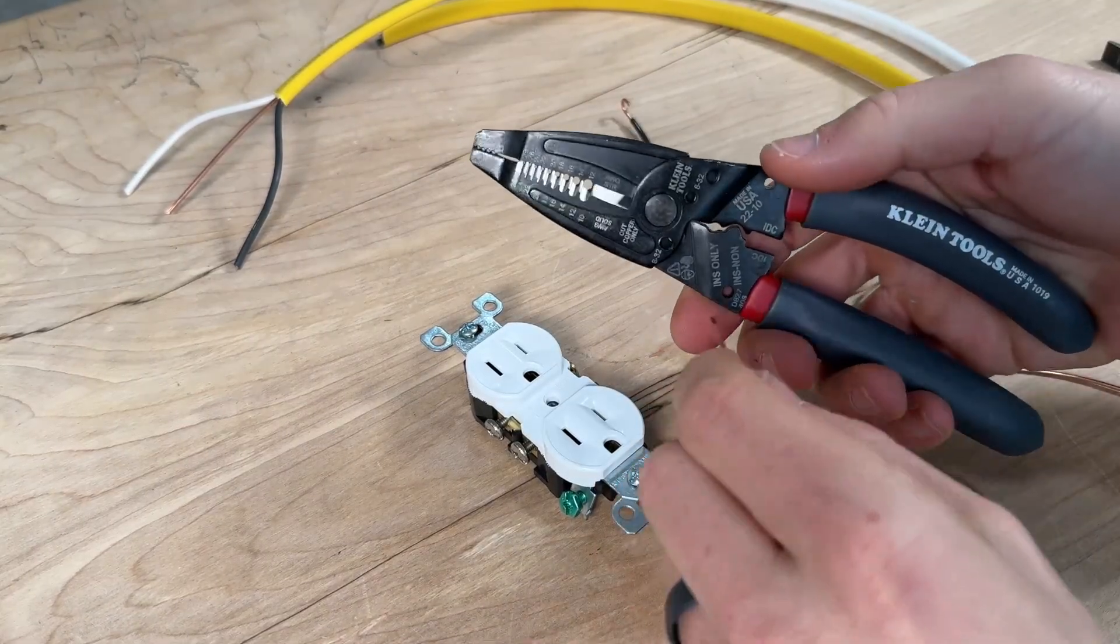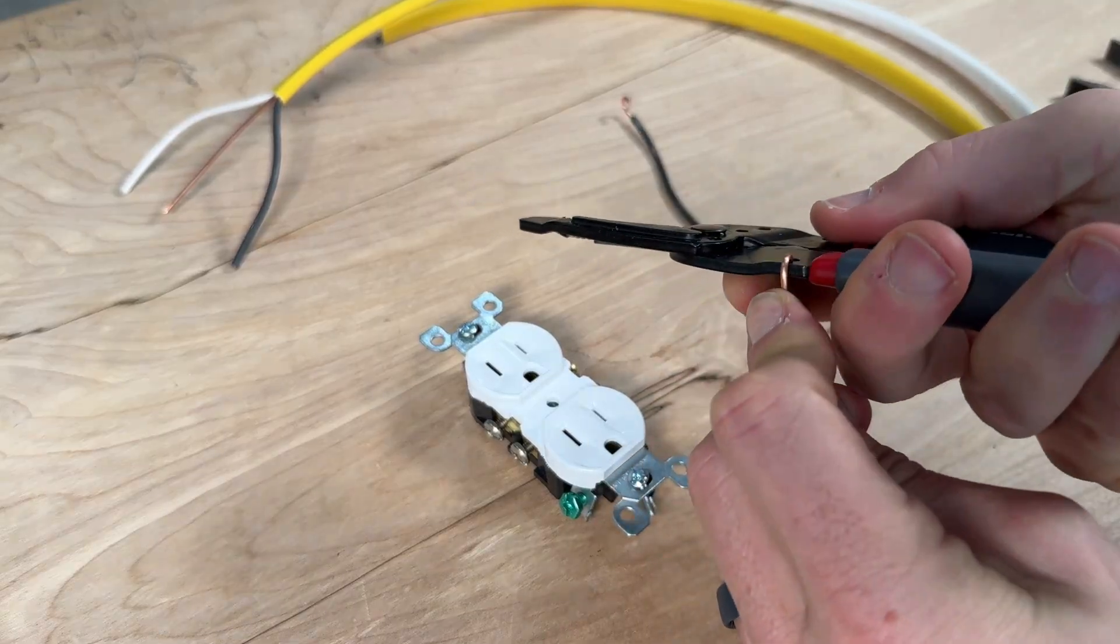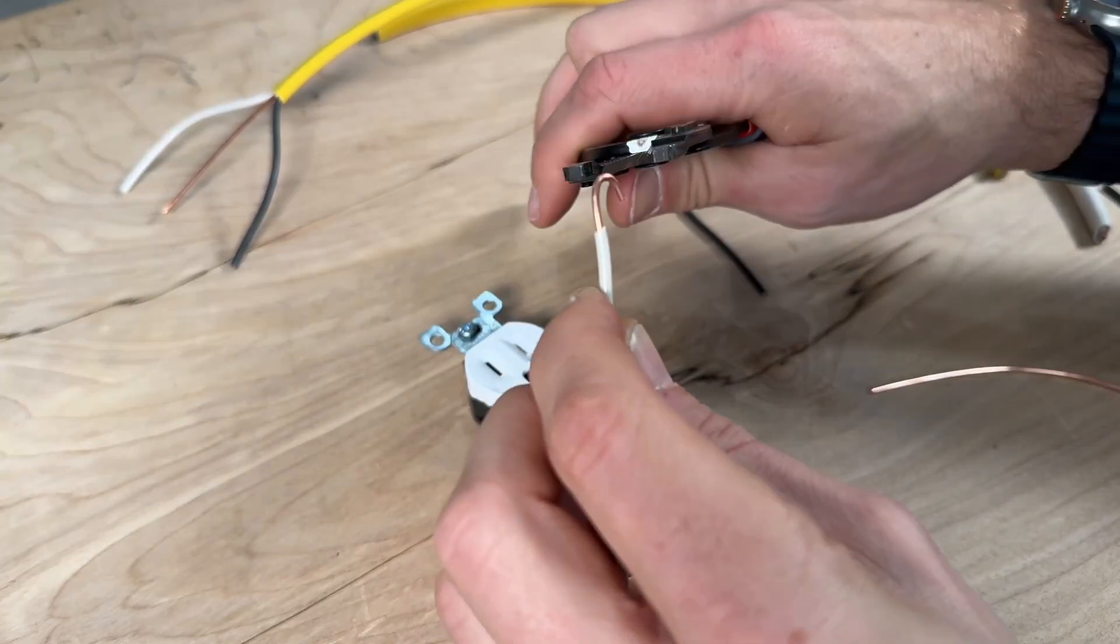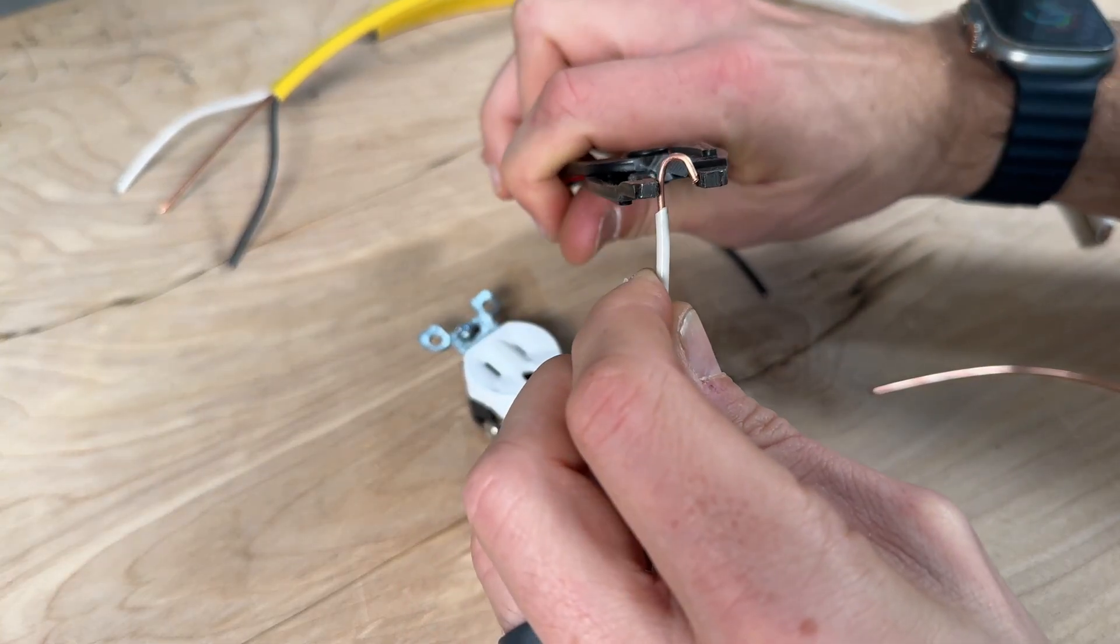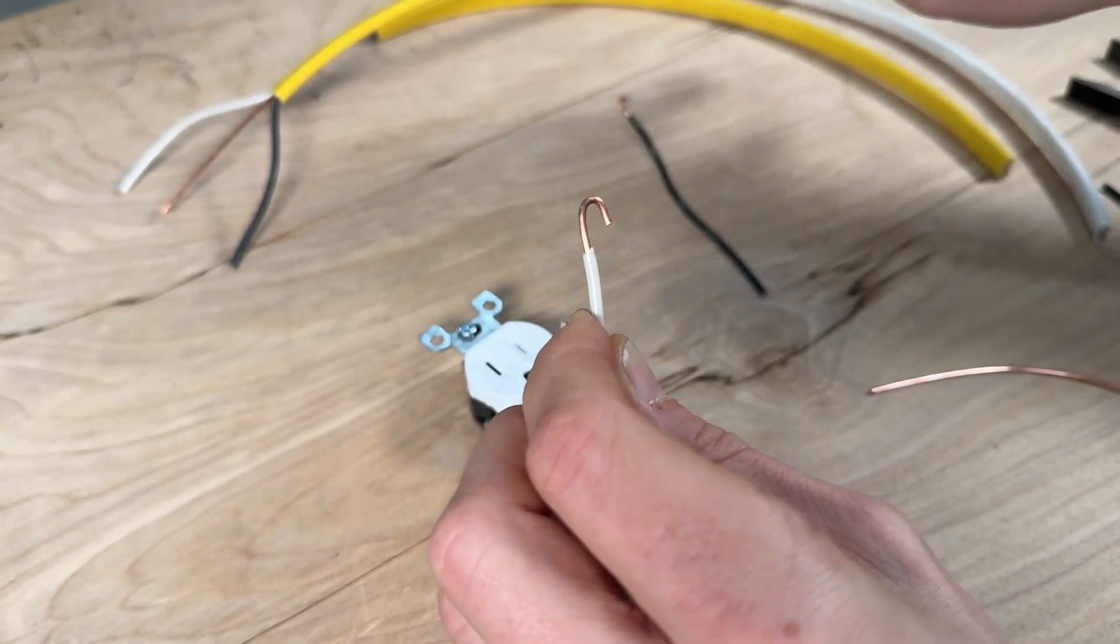If you have standard wire strippers, you probably have a hole right in the handle that can help you with a J hook. If it's a little open like that, just crimp it down with your wire strippers to close off the opening.